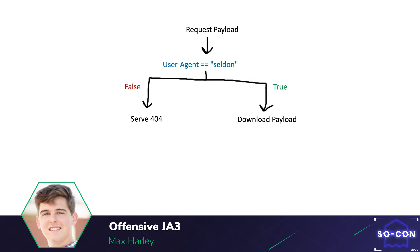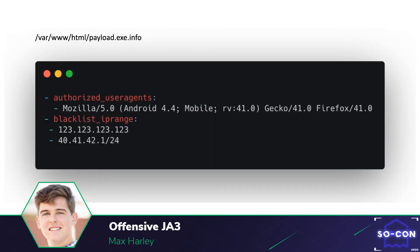One common way to key payload network traffic is to whitelist user agents and IPs used by that organization after some reconnaissance. Using Satellite, you can do IP and user agent block listing with ease. In the /var/www/html directory, payload.exe is the file you want to send to the user. To add keying rules to the payload, you can create a text file with .info appended to it — in this case, it's payload.exe.info.